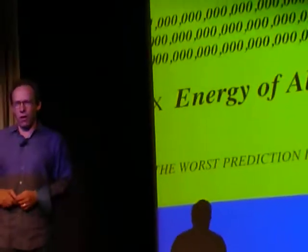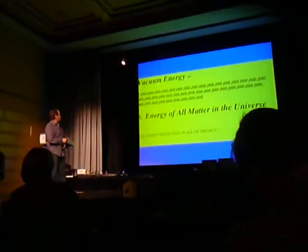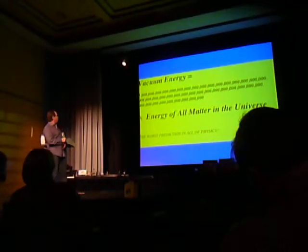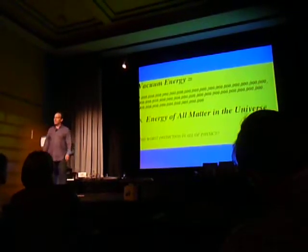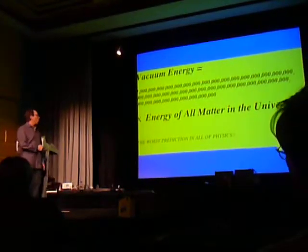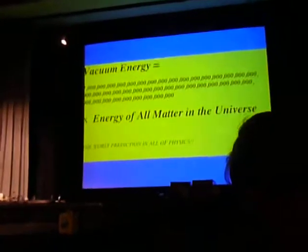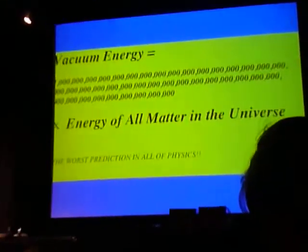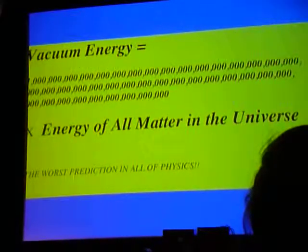And we can do the calculation. But we come up with the worst prediction in all of physics. We calculate that the energy of empty space should be roughly one gazillion times the energy of everything we see — 120 orders of magnitude more energy in empty space than everything we observe. And that's just impossible. It is literally the worst prediction in all of physics.